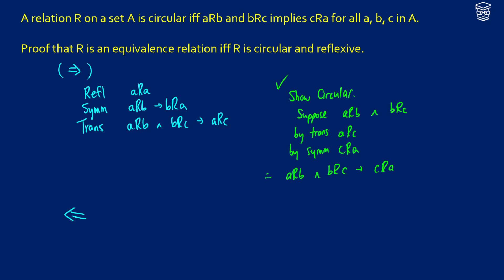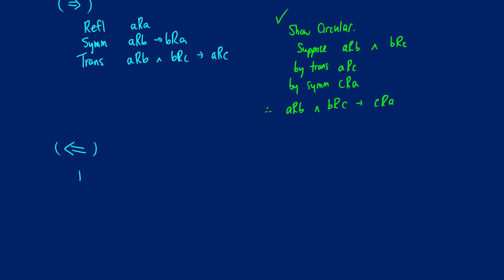This one might be a little bit more difficult. So in this case, we're assuming two things. We're assuming that it is reflexive, so it's having aRa. And we also assume it's circular, so aRb and bRc is going to give us cRa.